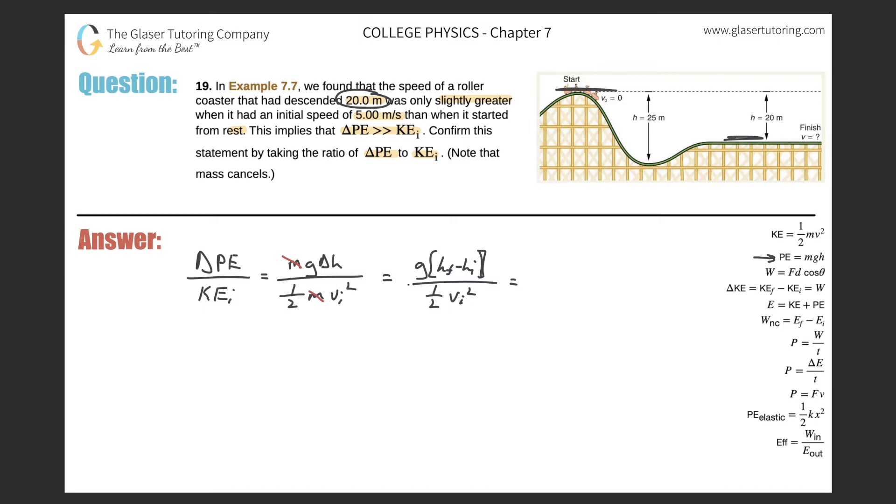But again, it's just a ratio, so you don't even have to worry too much about the sign. We're just trying to figure out how much larger it is. We don't really need to know a particular magnitude. It won't change the value of the ratio. So you could just leave it positive.